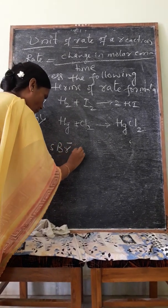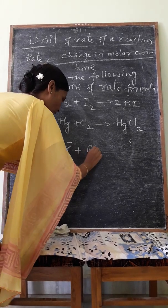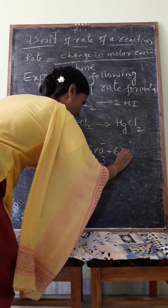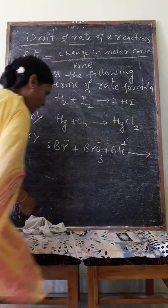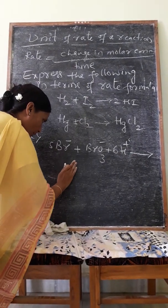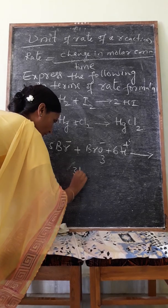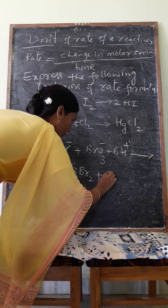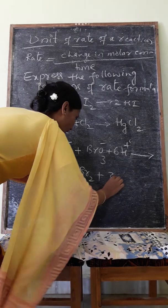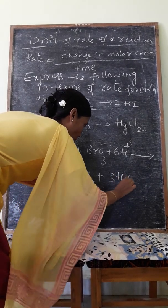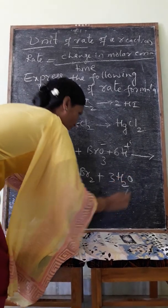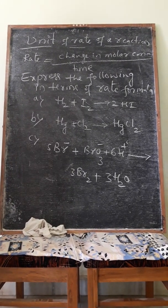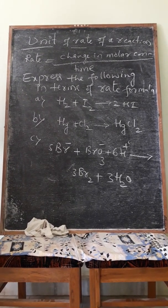Third: 5Br⁻ + BrO3⁻ + 6H⁺ giving 3Br2 + 3H2O. Represent these reactions in rate expressions.